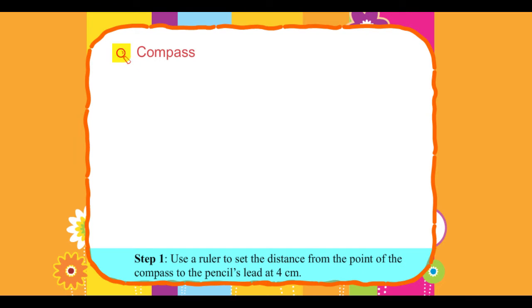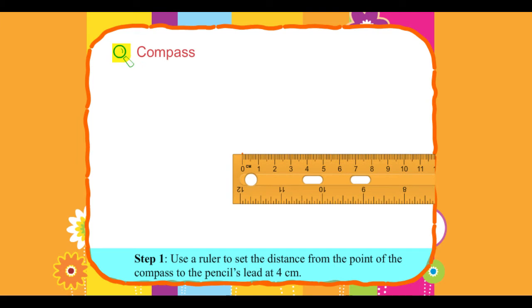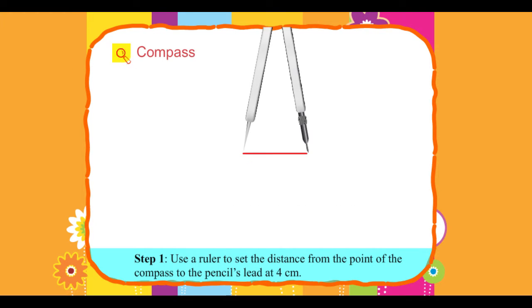Solution. Step 1: Use a ruler to set the distance from the point of the compass to the pencil's lead at 4 cm.